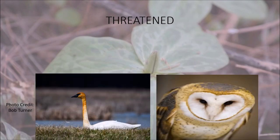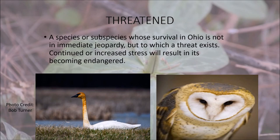A threatened species is an organism whose survival in Ohio is not in immediate jeopardy, but to which a threat exists — continual or increased stress will result in it becoming endangered. Trumpeter swans and barn owls are really great examples. In Marion County, especially on the west side near Big Island Wildlife Area and Marion Tallgrass Trail, you see a lot of trumpeter swans during the winter season. There are only very few pockets of trumpeter swan populations throughout the state, so we're very fortunate to have an abundant population in our county.